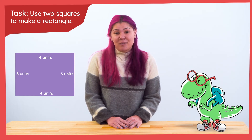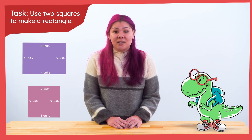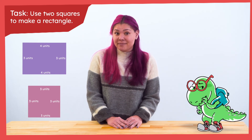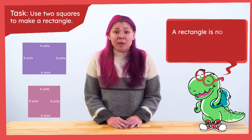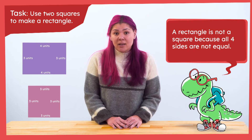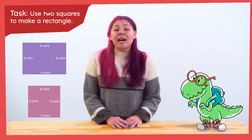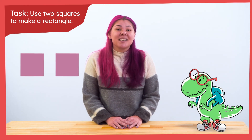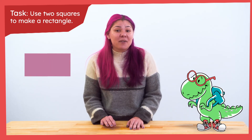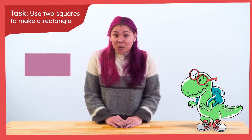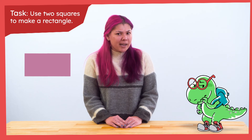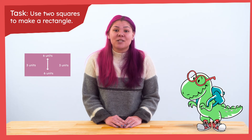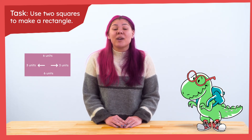A square can also be called a rectangle because it has four equal sides and the opposite angles are equal. But a rectangle is not a square because all four of its sides are not equal. Now that we know the difference between our two shapes, how can we make a rectangle using two squares? If I place two squares together, I can make one rectangle. Even though all of the sides are equal, this shape is still a rectangle because the opposite sides are equal to each other. So these two squares make one rectangle.